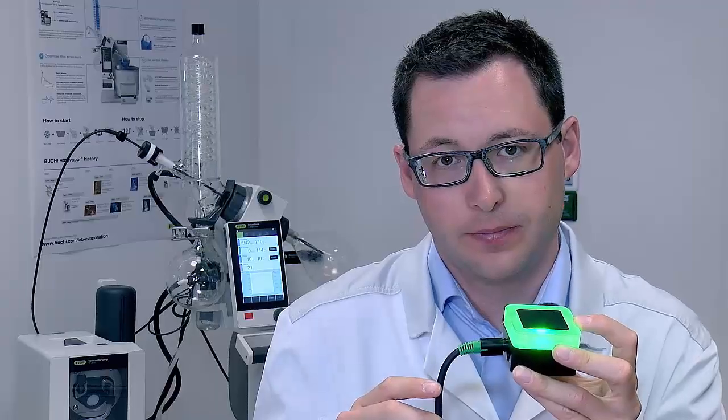This light is compatible with the R300, R220 Pro, and the LiO vapor. The nice thing is you can see it from 360 degrees. You can mount it on the rotary evaporator or stick it to a fume hood, so you can really see it throughout the lab and see what's happening.